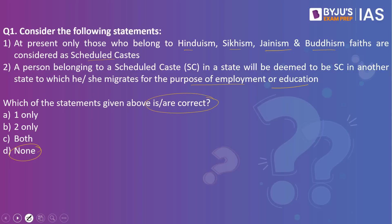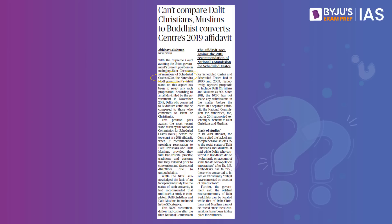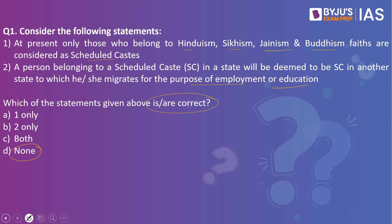Why this question? Because this article in The Hindu makes reference to the Scheduled Caste. When we look into the SC community, these were people who were once oppressed and faced deprivation. Certain castes were added into the Scheduled Caste list. According to the Constitution (Scheduled Caste) Order of 1950, only marginalized communities from Hinduism, Sikhism, and Buddhism fall under the SC category — it did not include Jainism. So the first statement is wrong.